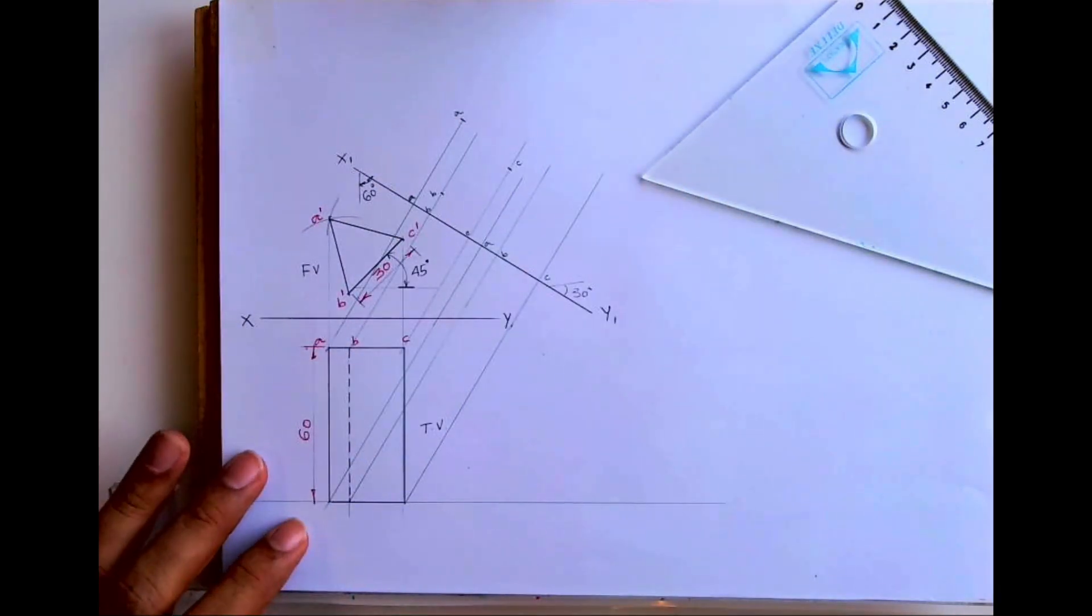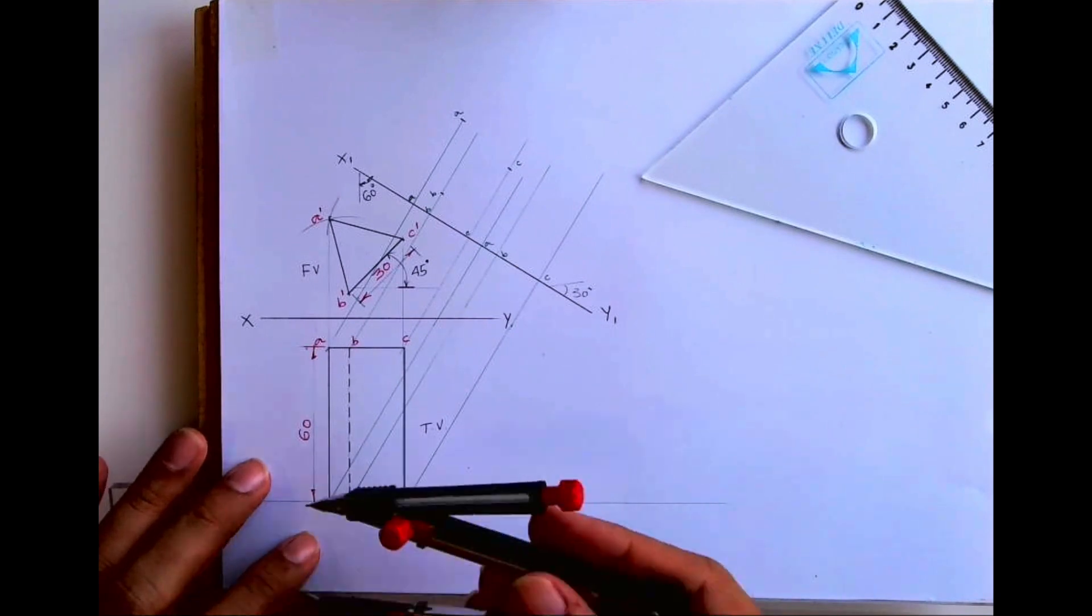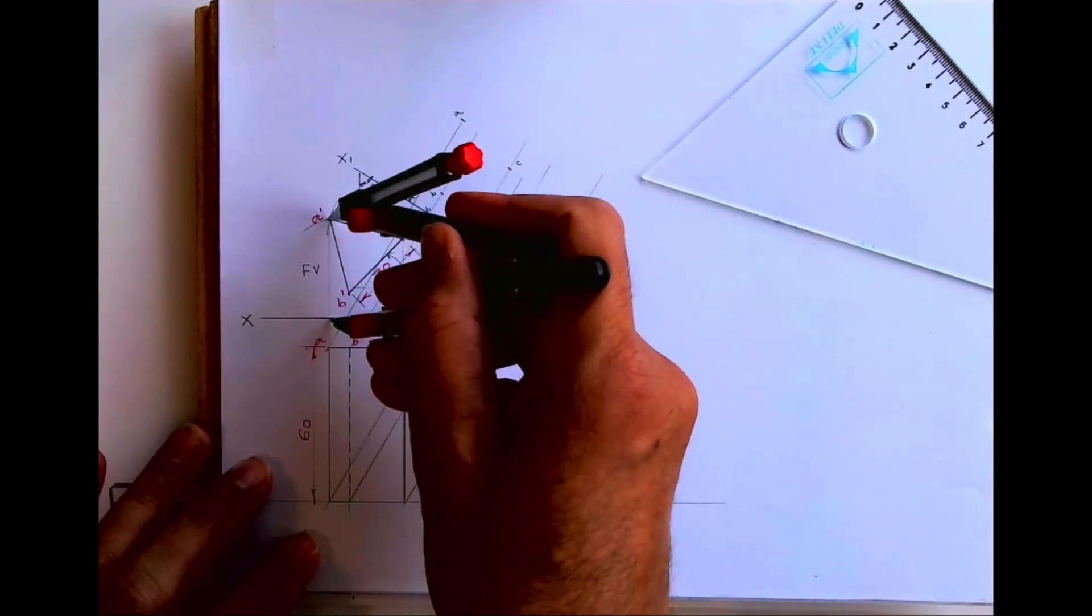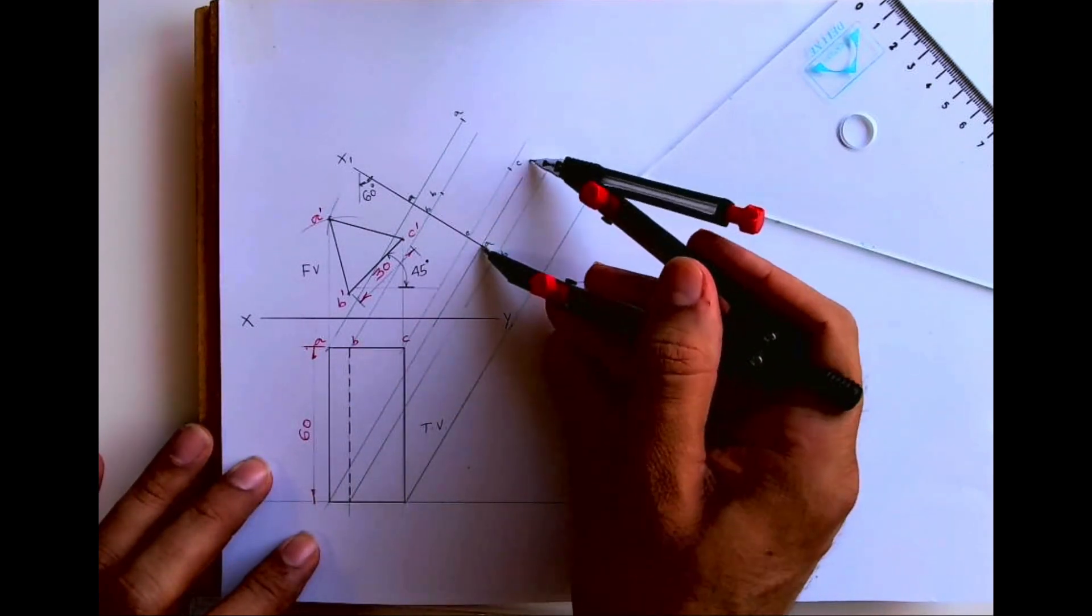This is AB, BC. Same we will do it for the bottom points also. XY to A dash, and from B we will cut it over here.